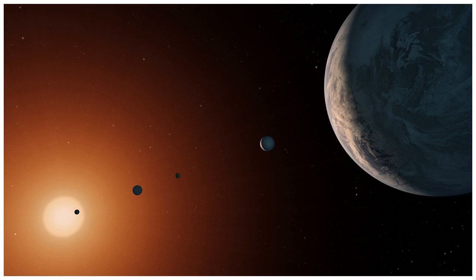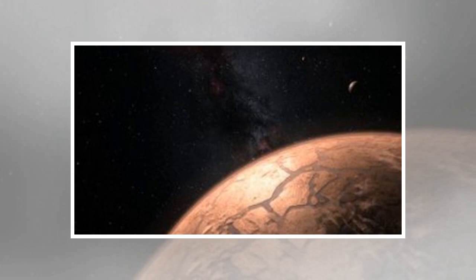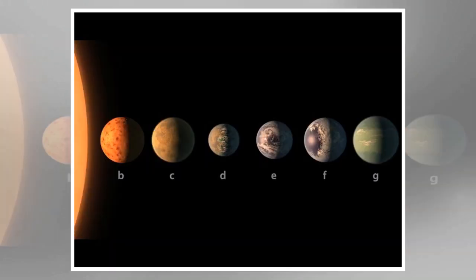One reason that scientists have to believe that the TRAPPIST-1 system may play host to life is the concept of panspermia. This refers to the process of planets trading material like rocks and dirt due to huge impacts on the respective surfaces. This can foster a trade in complex organic molecules that might lead to living organisms.